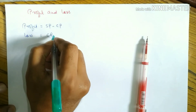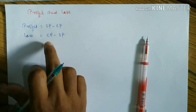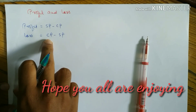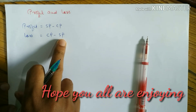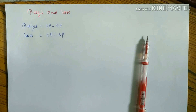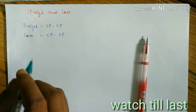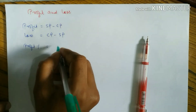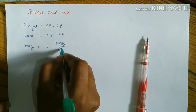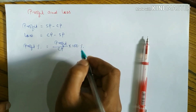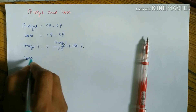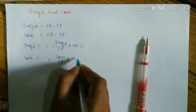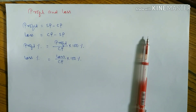The formula for profit is: Profit = SP minus CP. Loss = CP minus SP. To find profit percent, the formula is: Profit% = (Profit / CP) × 100. Similarly, to find loss percent: Loss% = (Loss / CP) × 100.